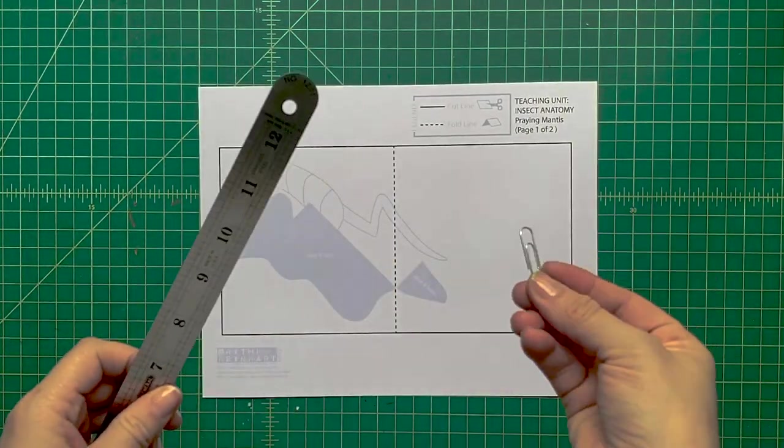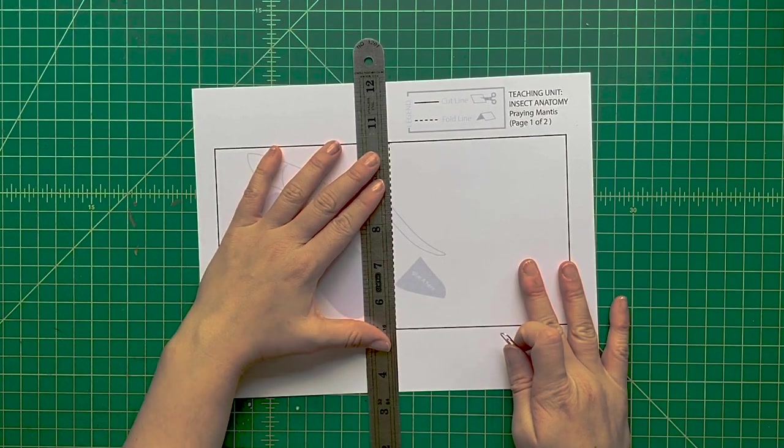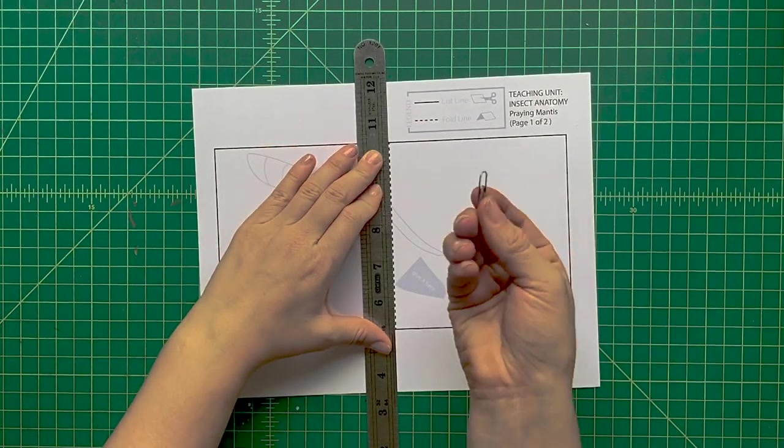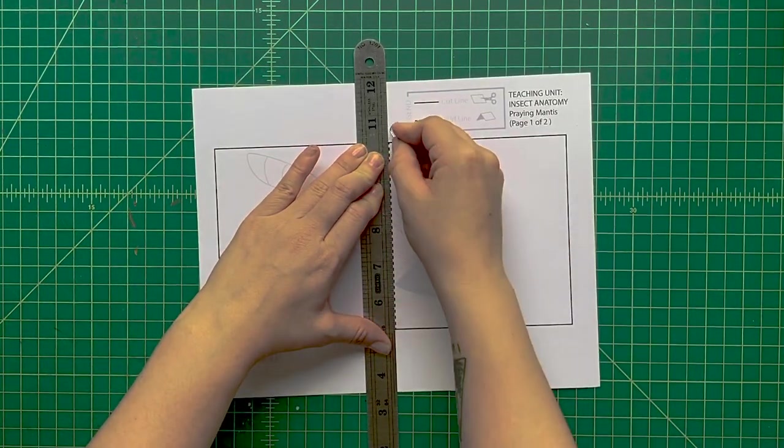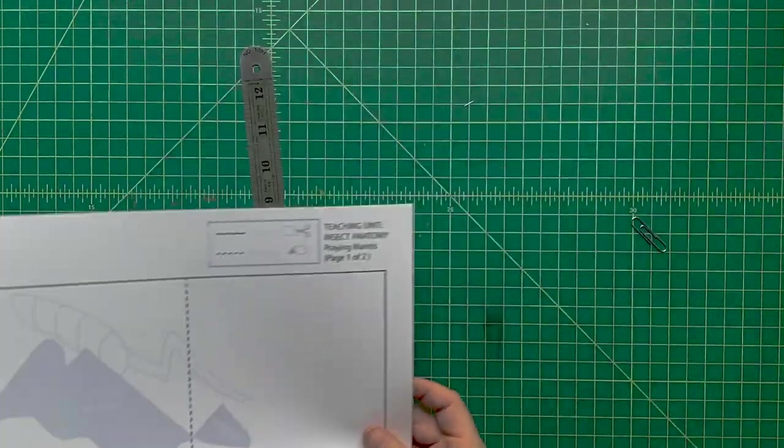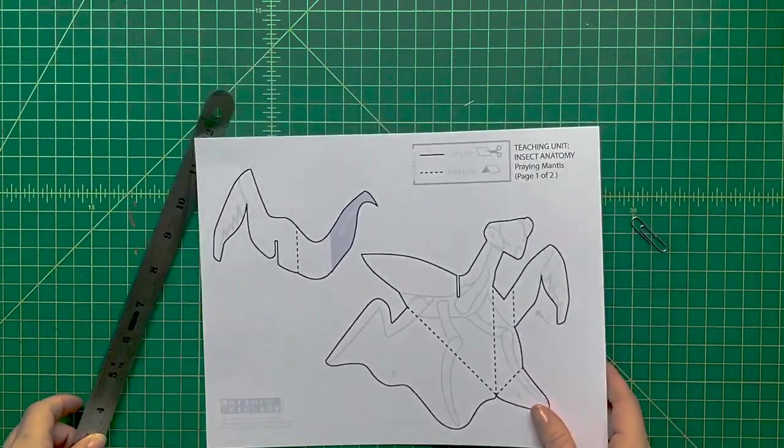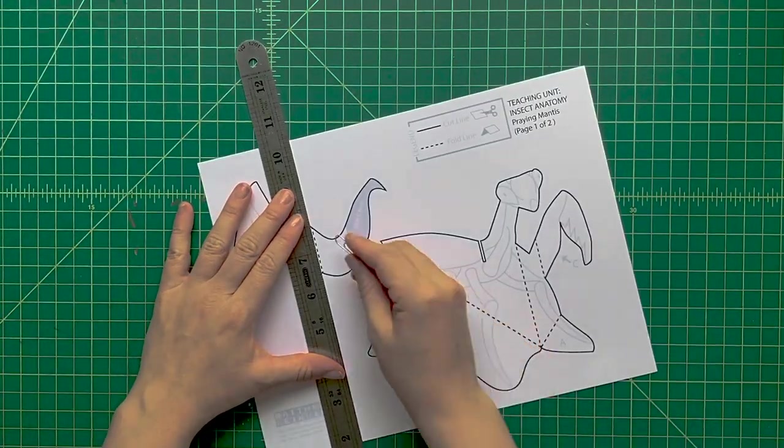First we're going to use the dotted line. Take a ruler and a large paper clip and line the ruler up along each dotted line. Press with the paper clip onto the dotted line. What we're doing is scoring where there's going to be a fold on our pop-up.